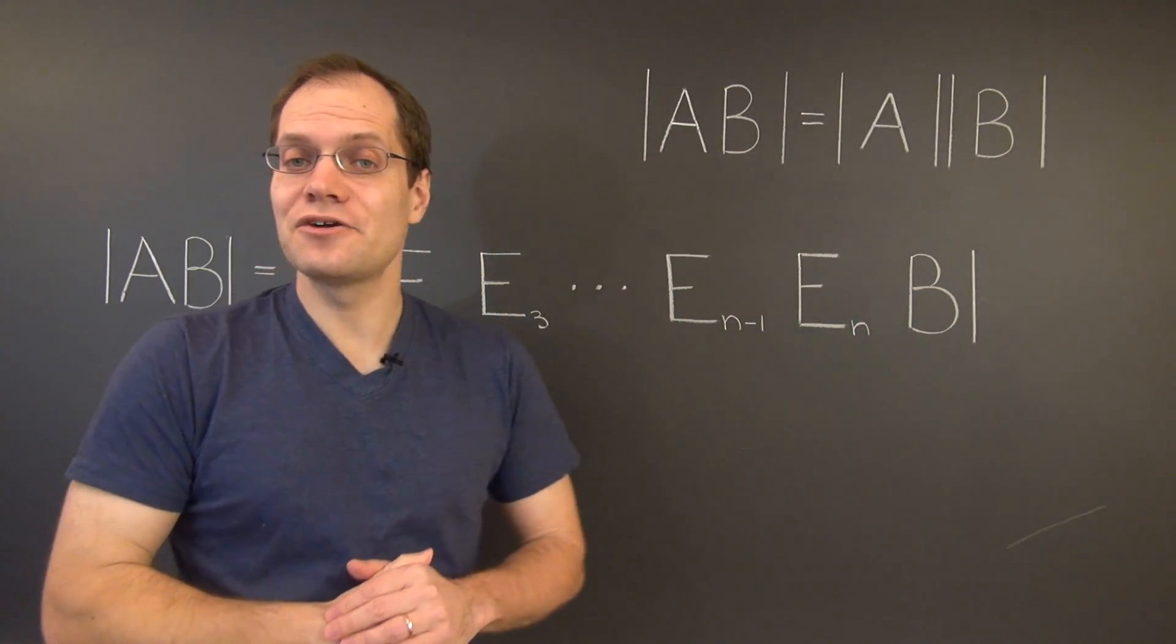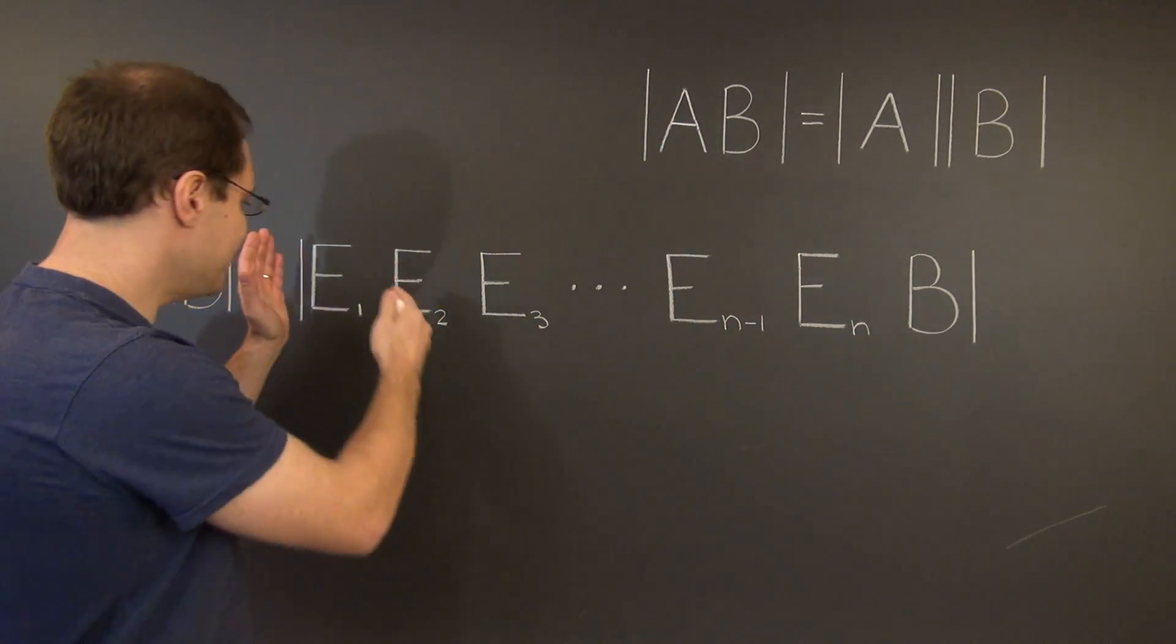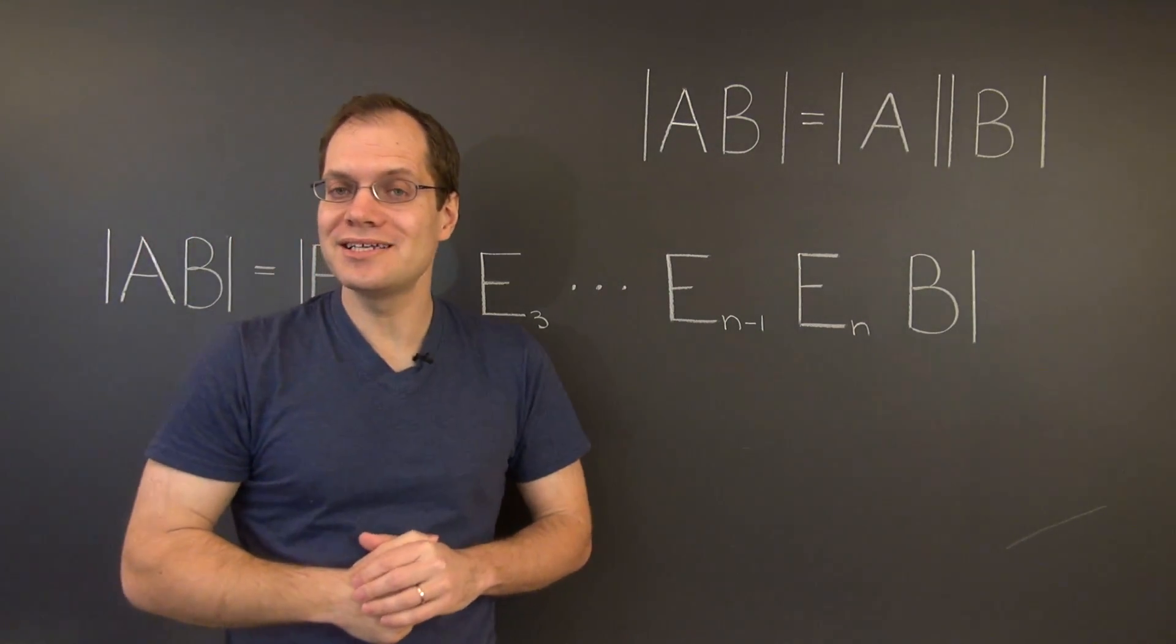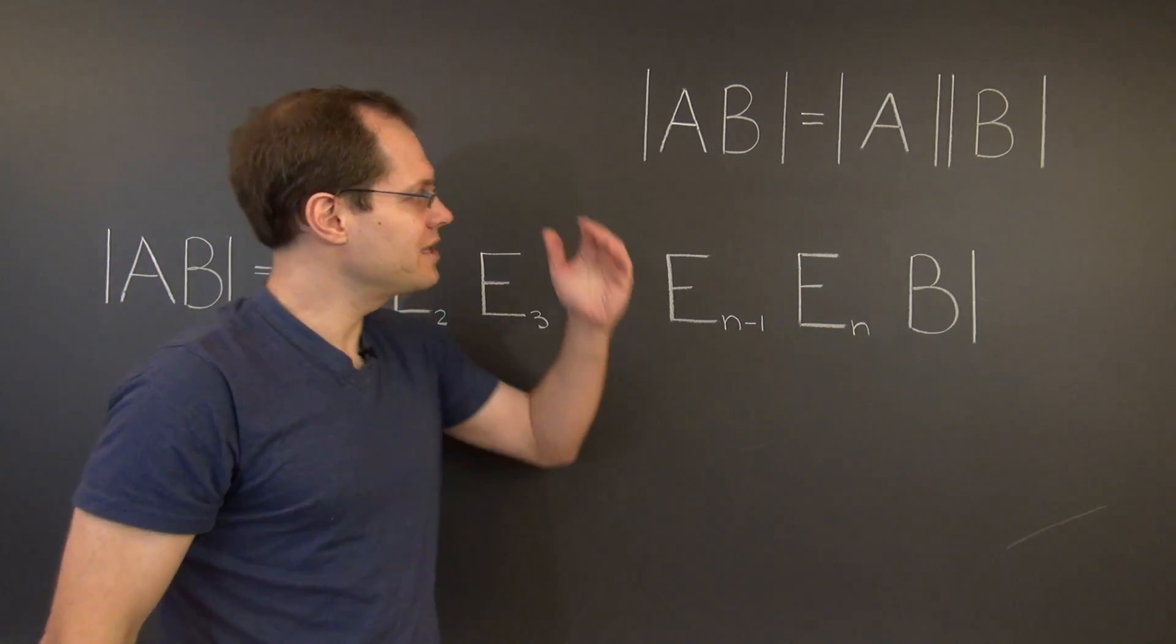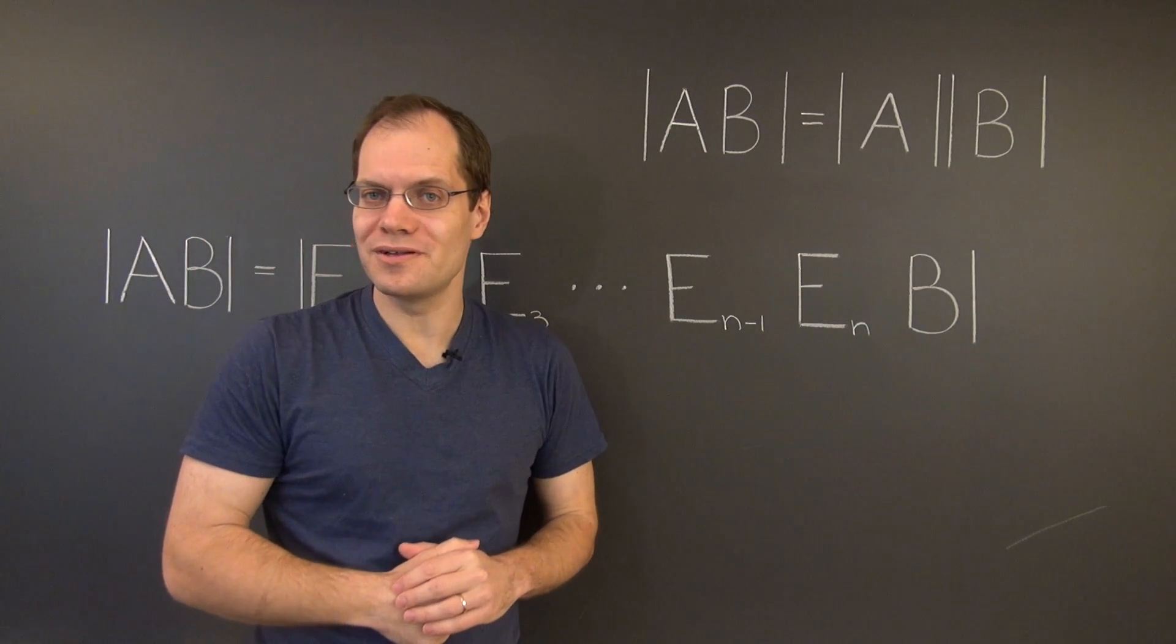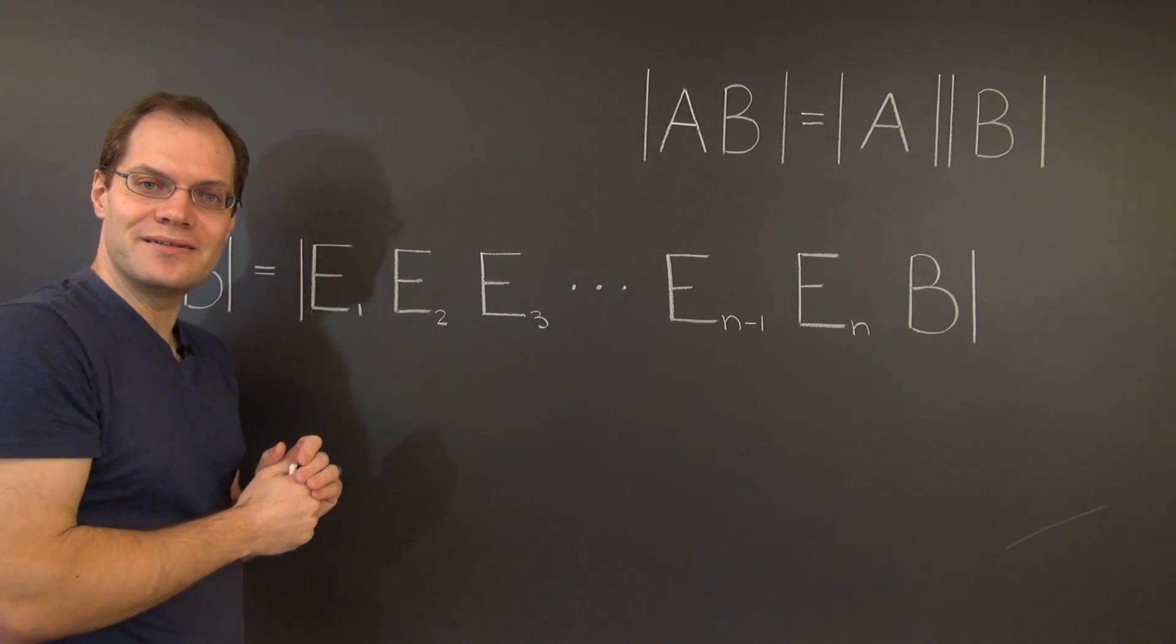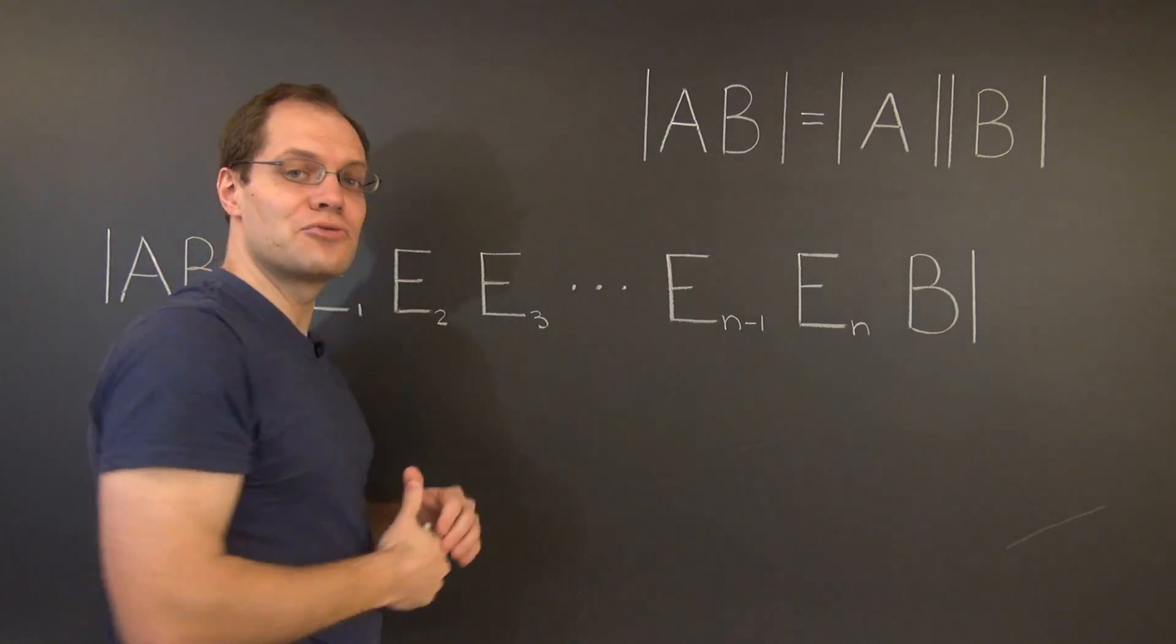Now let's think of this long product as E1 times the rest of the product. And because E1 is an elementary matrix, we can legitimately apply this formula. And this determinant becomes the determinant of E1 times the determinant of the rest of the product.